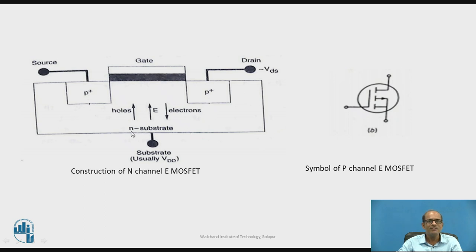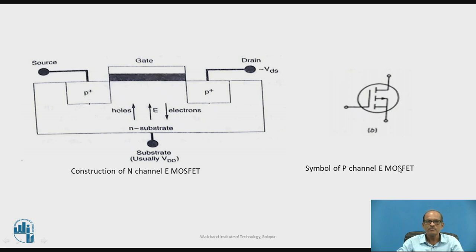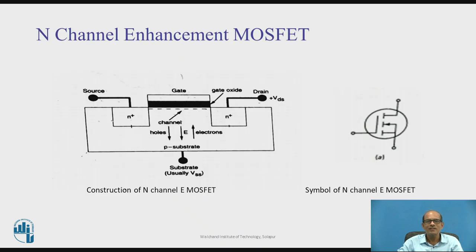For P-channel MOSFET, the substrate is N-type. On to the N-type substrate, the heavily doped P-regions are obtained by diffusion. One of them is drain and another is source, and in between drain and source the channel is formed. There is an insulating layer of SiO2, and over the SiO2, polysilicon is used for making contact to the gate. This is the construction of P-channel MOSFET. In the symbol, the arrow direction indicates that for N-channel MOSFET the arrow is toward the inside, and for P-channel MOSFET the arrow is toward the outside.